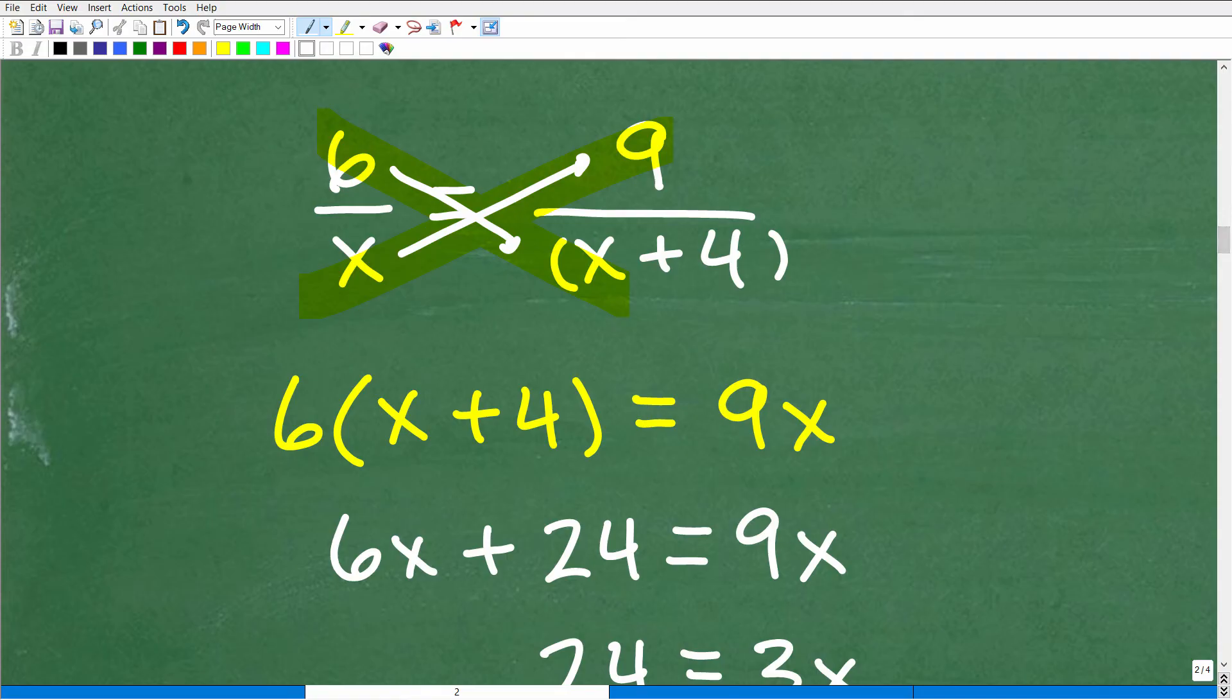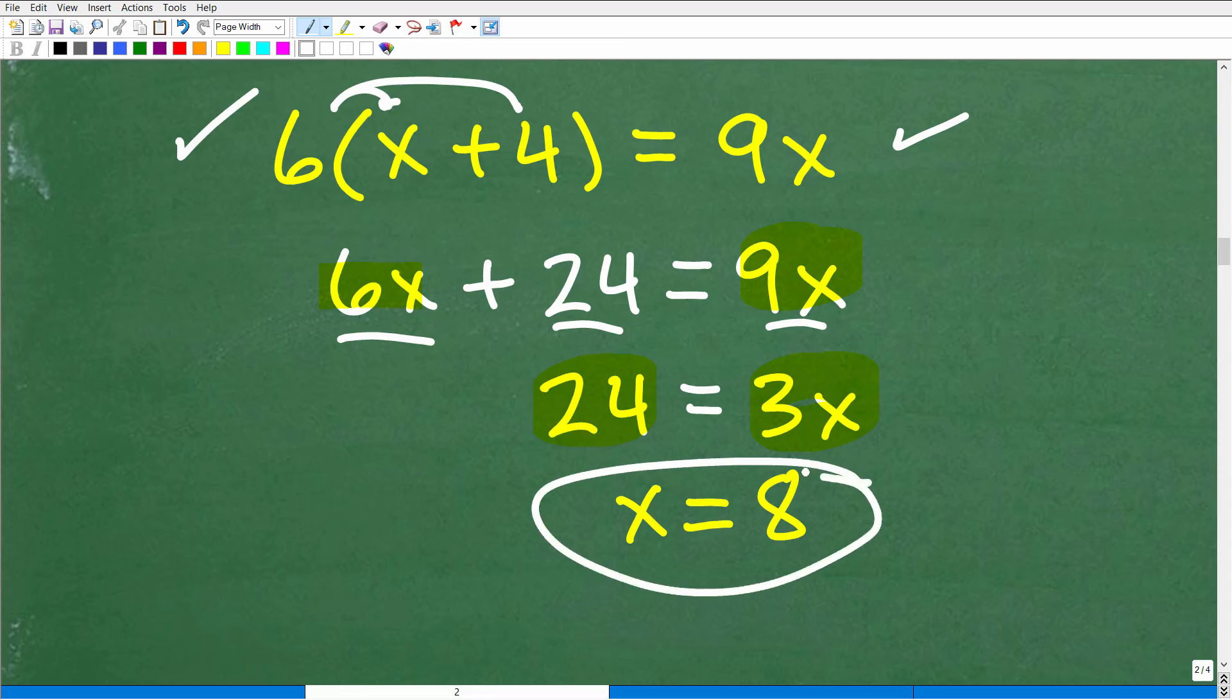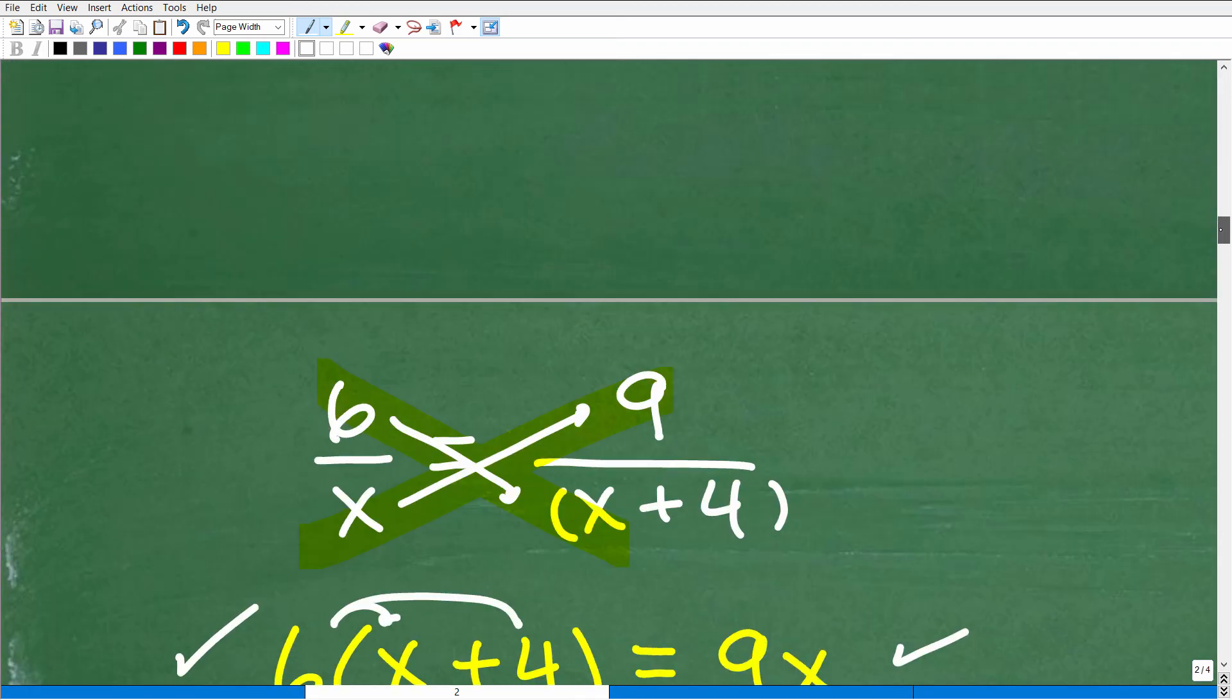All right, let's go ahead and finish up the problem. So 6 times x plus 4, that's that expression there, is equal to 9 times x. So again, this is the cross product. So let's go ahead and solve for x. So 6 times x, we're going to use the distributive property, 6x. 6 times 4 is 24. That's equal to 9x. So let me just go ahead and move the 6x to this side of the equation or subtract 6x from both sides of the equation. I have 3x is equal to 24. Now I simply just need to divide both sides of the equation by 3. And I get 24 divided by 3 or x is equal to 8, which is the solution.